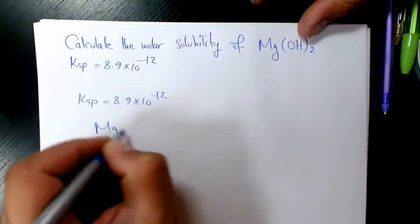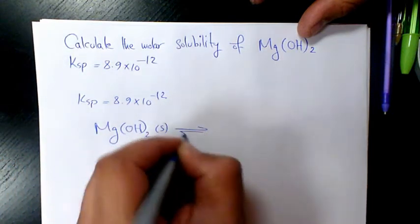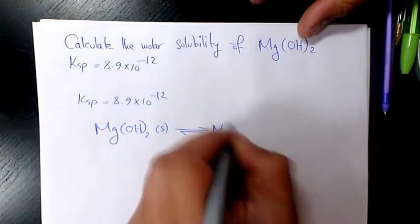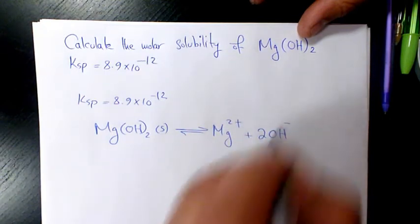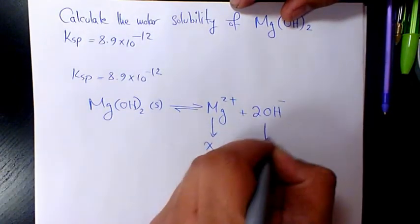In this case, when you dissolve Mg(OH)2 in solid form, it's going to produce Mg2+ ion and two hydroxide ions. It's going to be x from here, and this one is going to be double because the coefficient here is double.